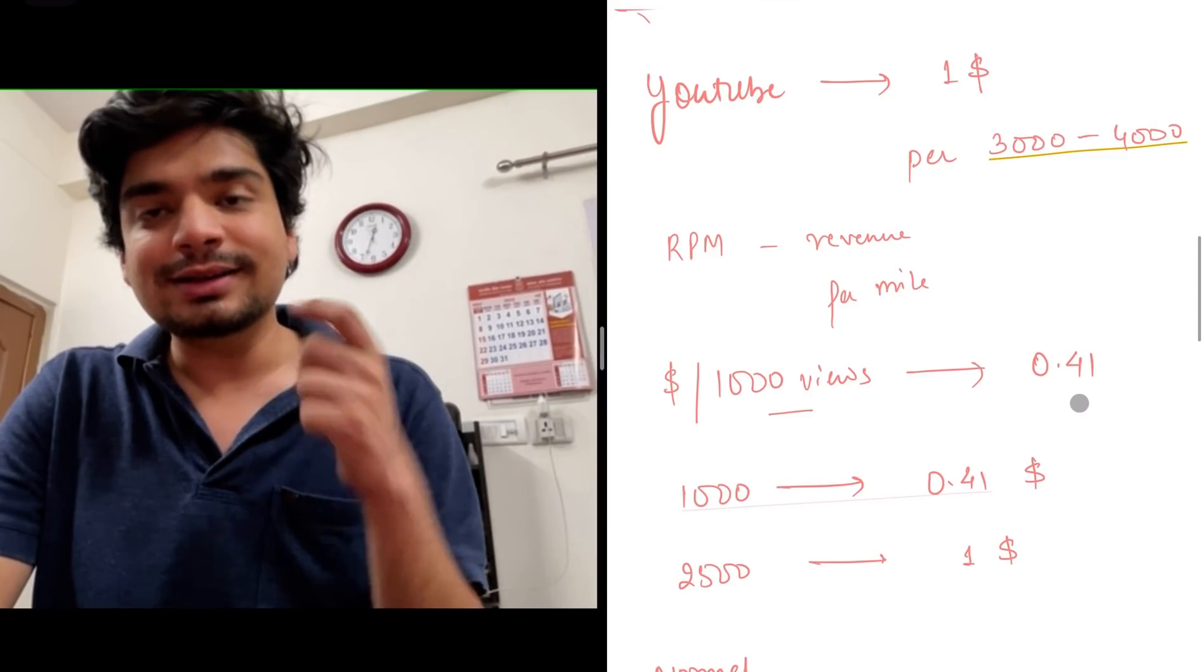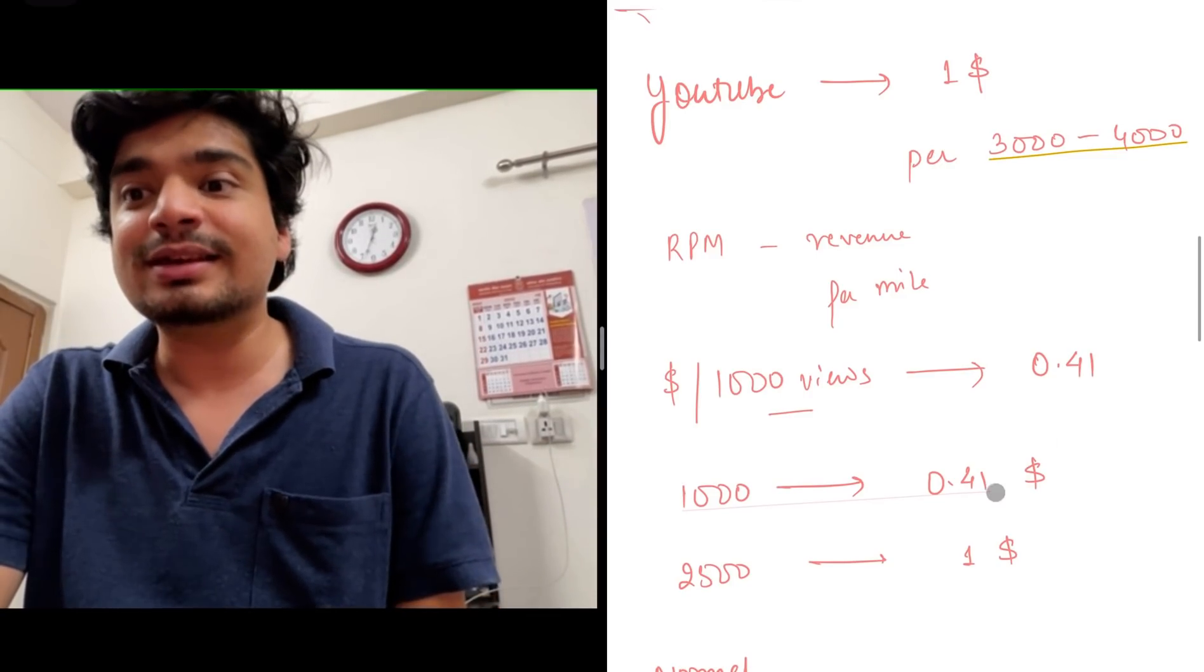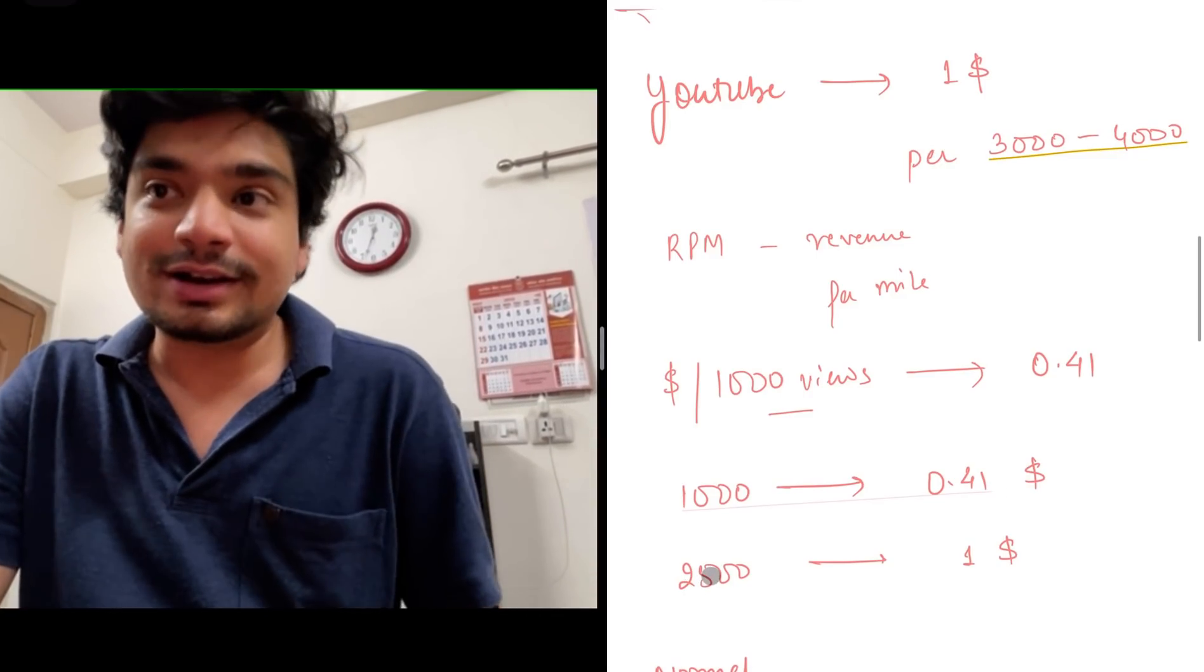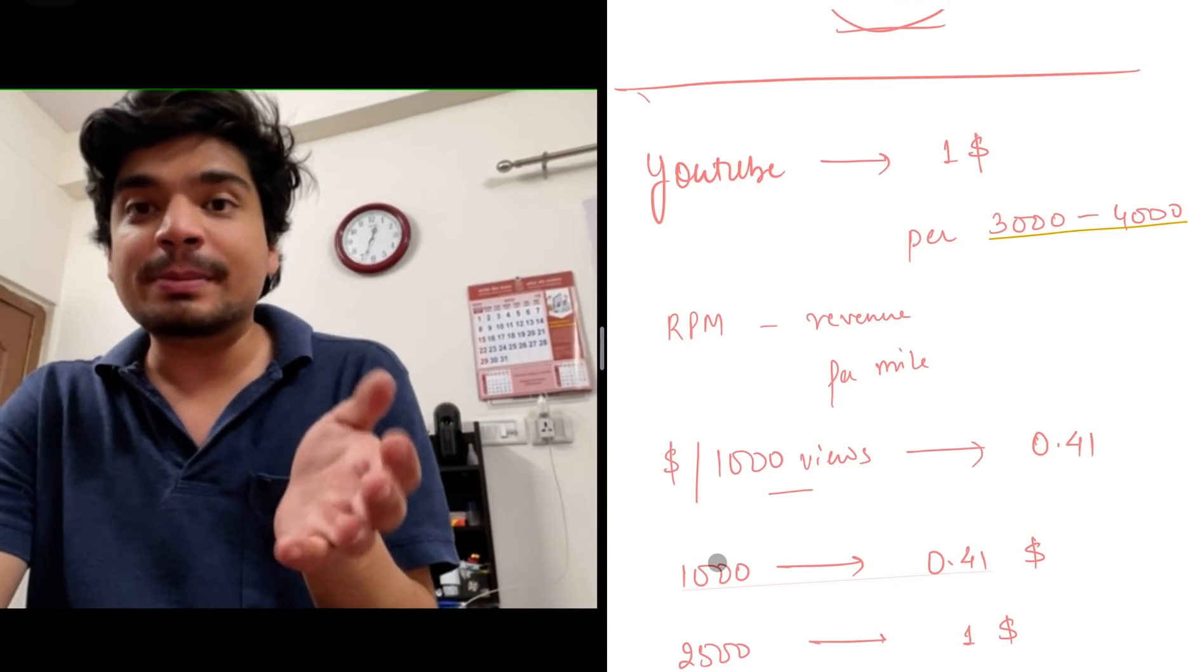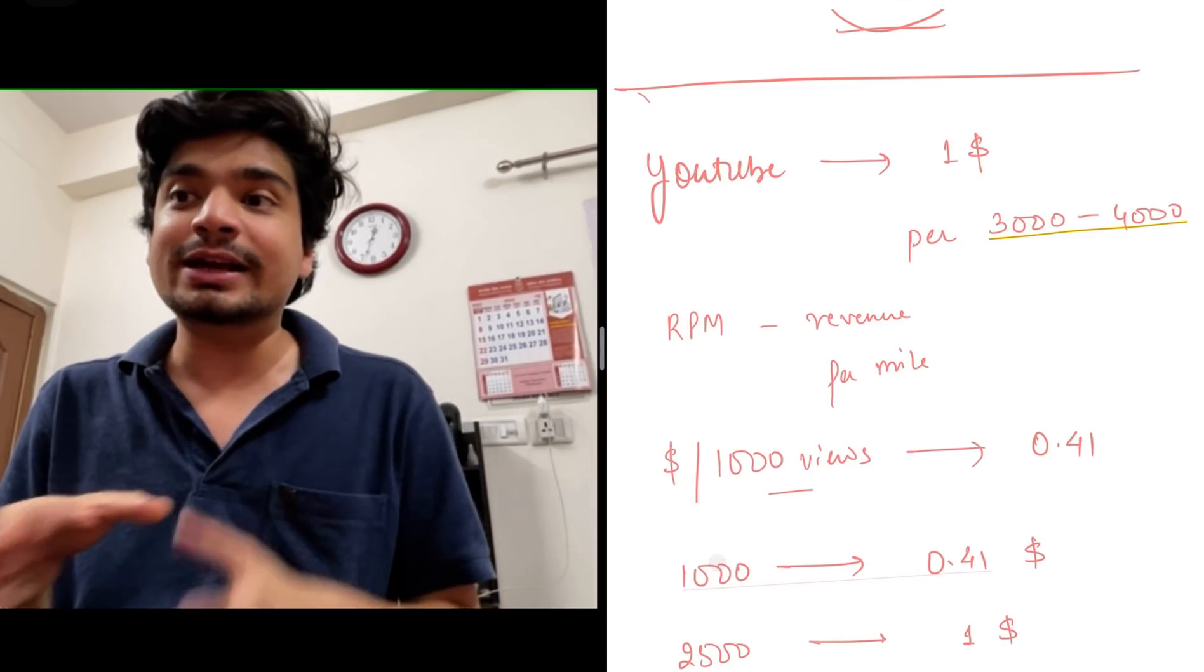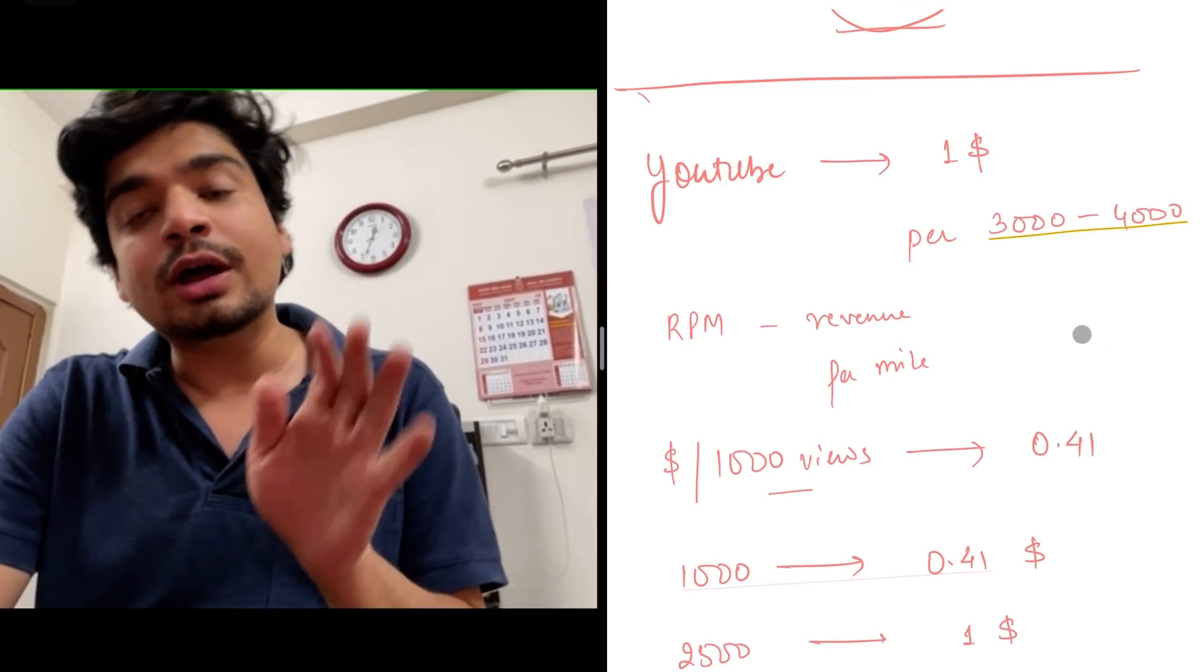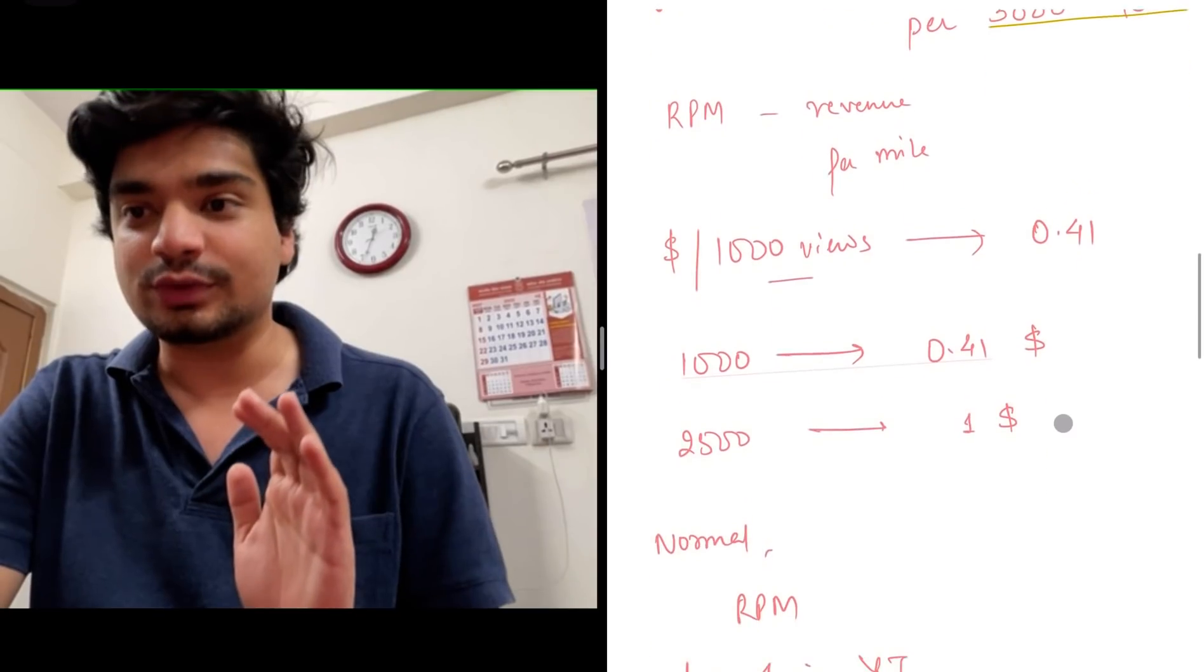So basically for every thousand views, YouTube is paying me 0.4 dollars. So I'm earning $1, that is around 70-75 rupees, with every 2,500 views. This revenue per mille for an Indian YouTuber is usually you get $1 every 3,000 to 4,000 views.